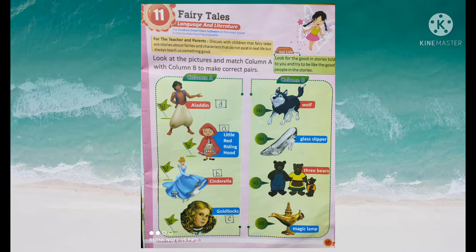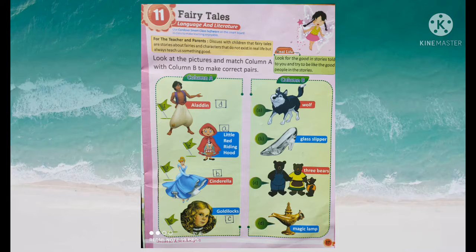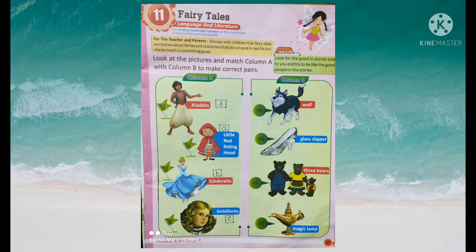Second picture: Little Red Riding Hood. This story is about a small girl. In that story we have a wolf. So we have to write option A for Little Red Riding Hood.